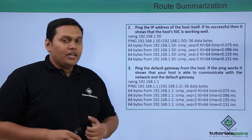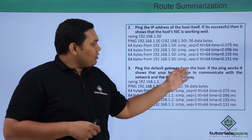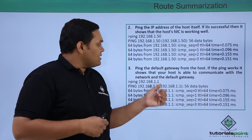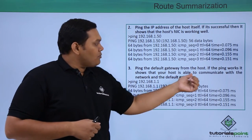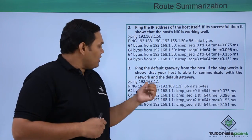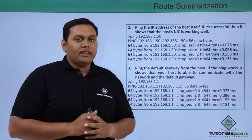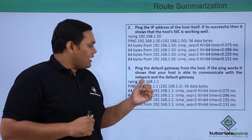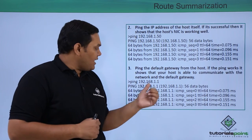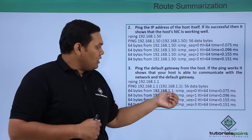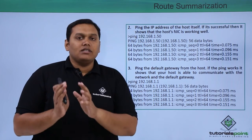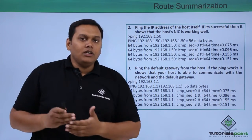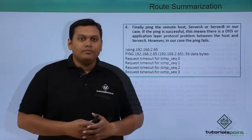The third step is pinging the default gateway from the host. If the ping works, the host is able to communicate with the network and the default gateway. For example, pinging 192.168.1.1 gives you this result. This is the third step to perform when troubleshooting connectivity.